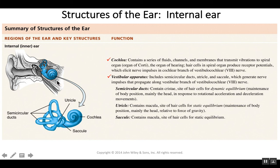Looking at the rest of the inner ear, we have a series of ducts known as the semicircular canals, and a structure which contains a couple of sacs called the utricle and saccule. We will look at these structures in the next video.